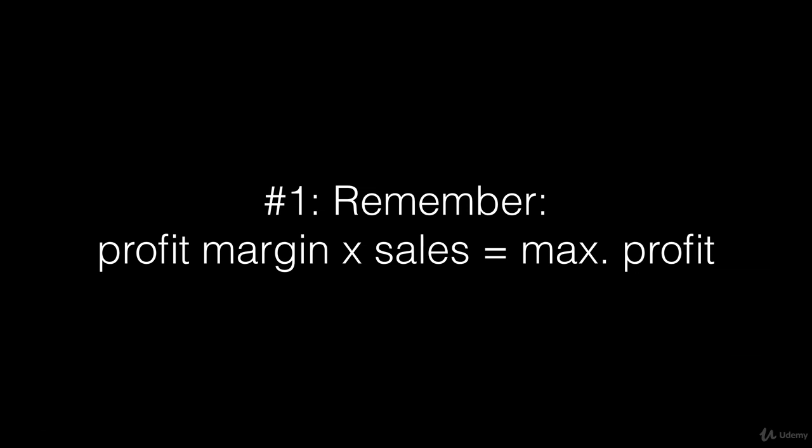Please remember the rule that we talked about: profit margin times sales equals the maximum profit. We talked about product 1 and product 2. On one hand, a product which had a high profit margin but a low number of sales, and on the other hand, product number 2, which had a very low profit margin but a very high number of sales. In the end, we figured out that it is not really about the profit margin — it is rather about the ratio, the product of profit margin times sales.